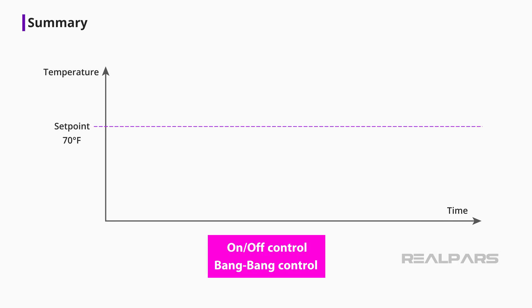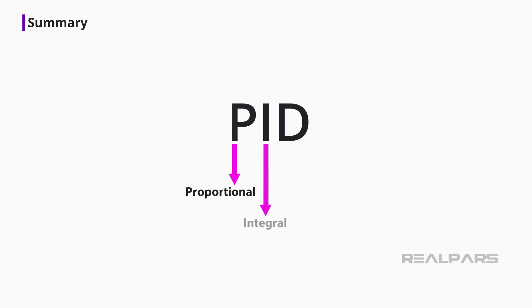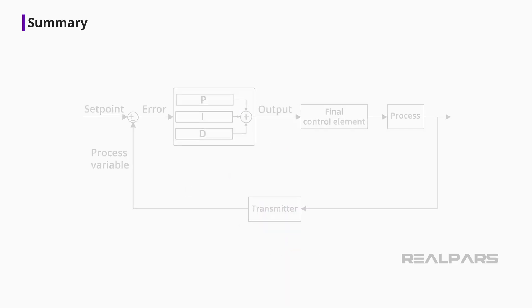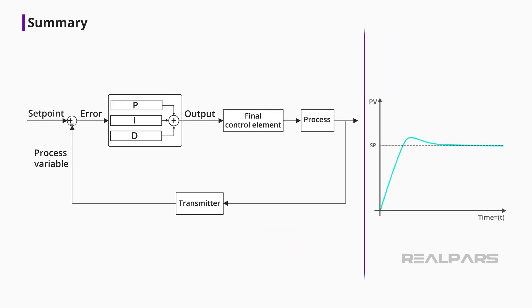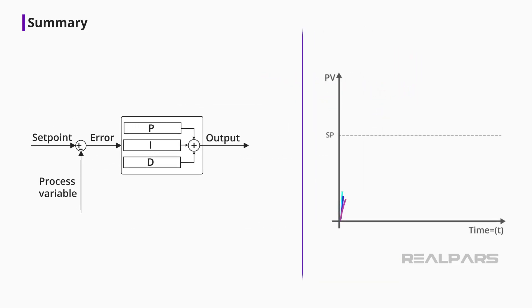An ON-OFF or bang-bang controller has only two output conditions and switches abruptly between these two conditions. In a PID controller, P stands for Proportional, I stands for Integral, and D stands for Derivative. The PID controller is responsible for ensuring that the process remains as close to the desired value as possible, regardless of various disruptions. The PID controller determines how much and how quickly correction is applied by using varying amounts of P, I, and D action.